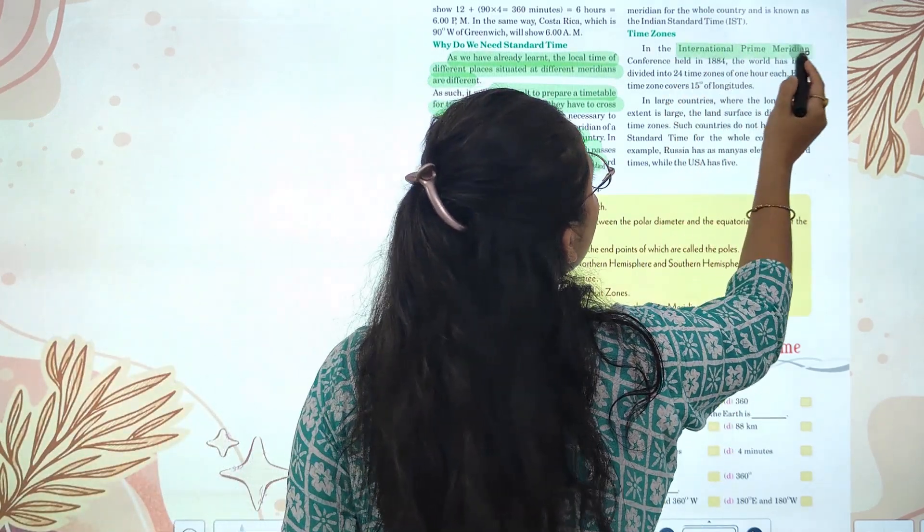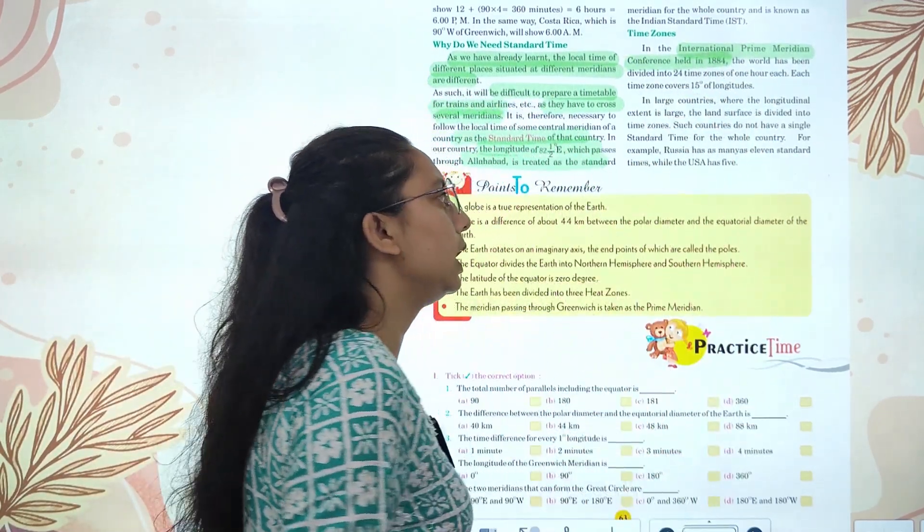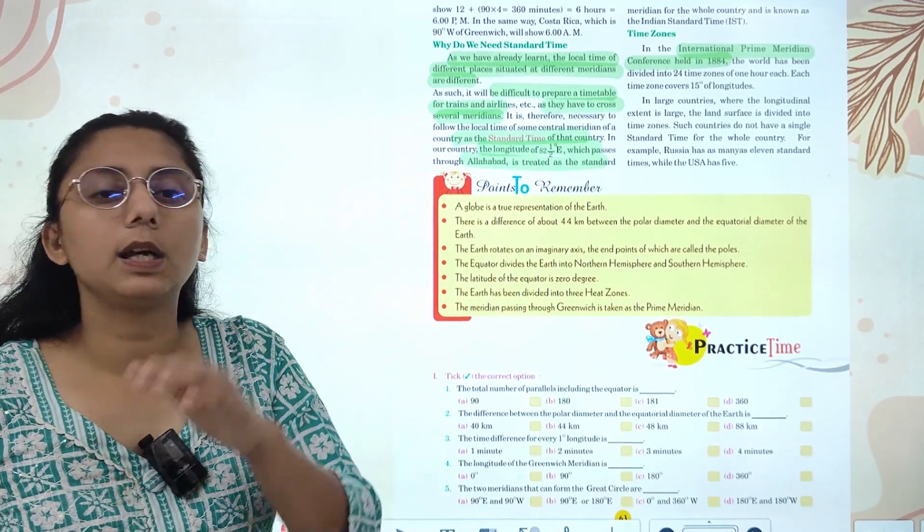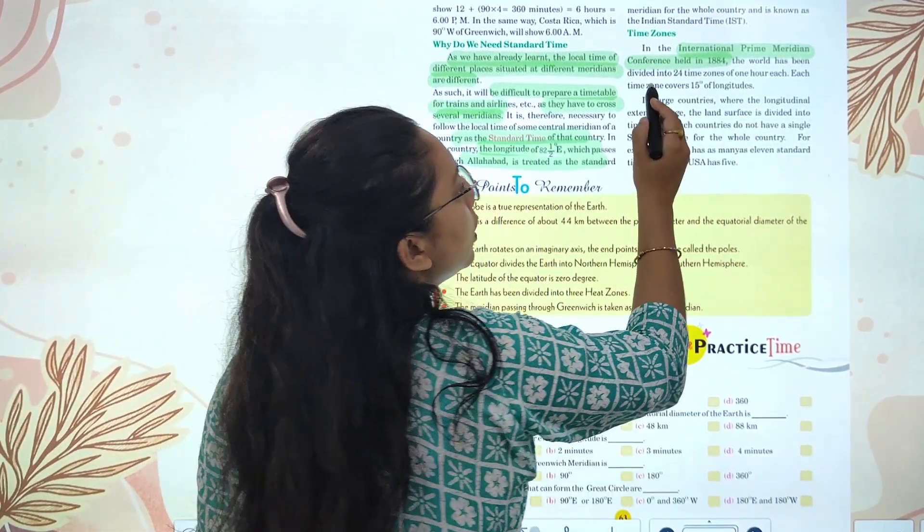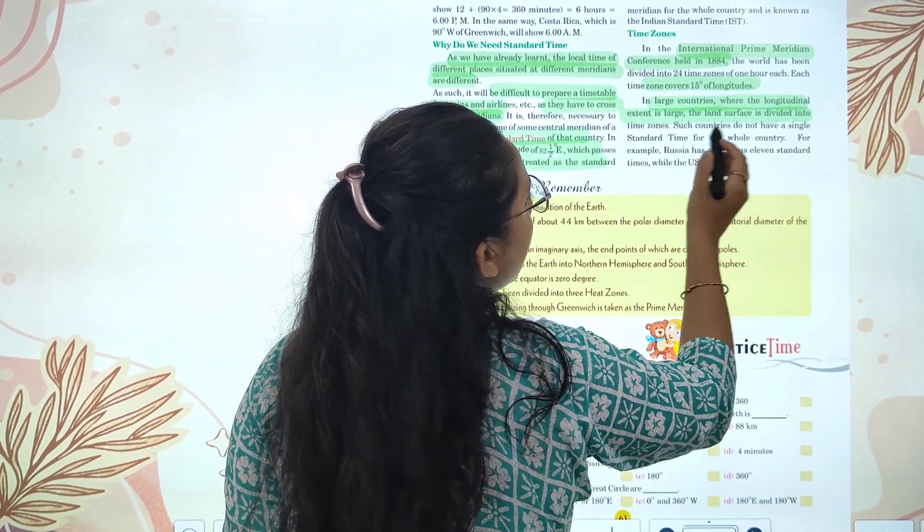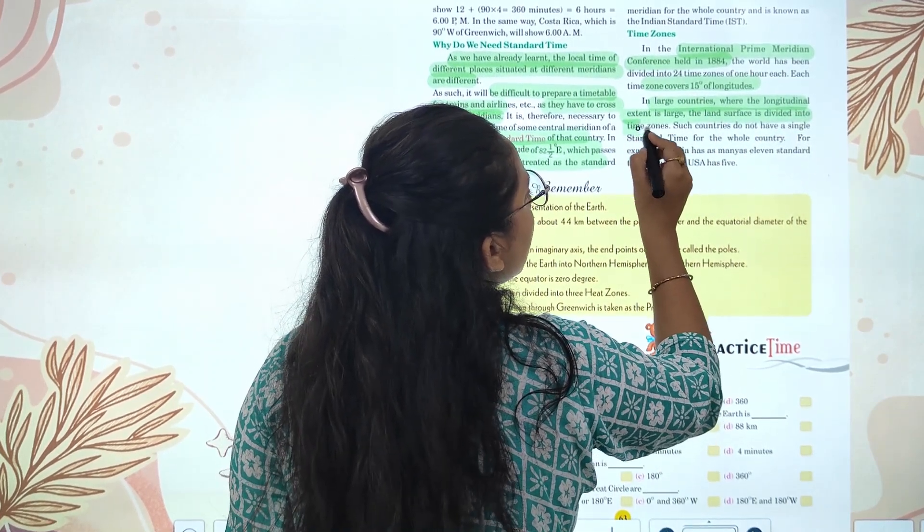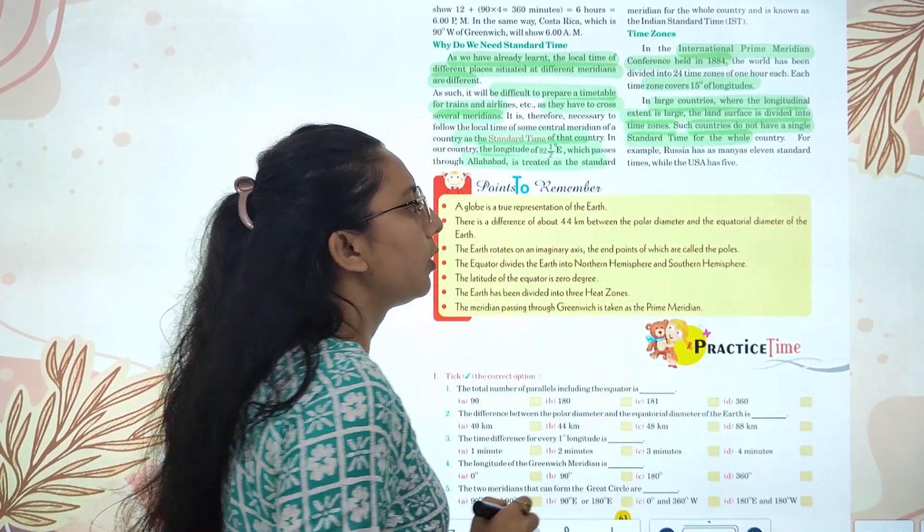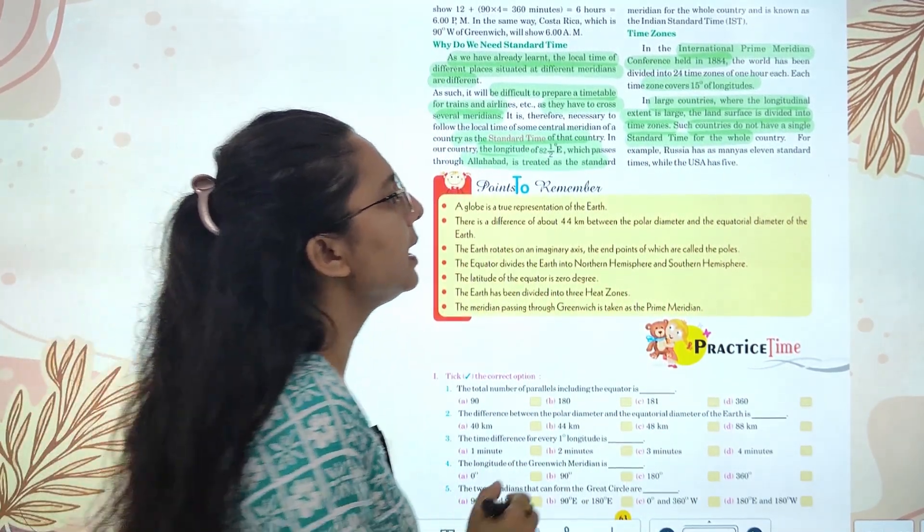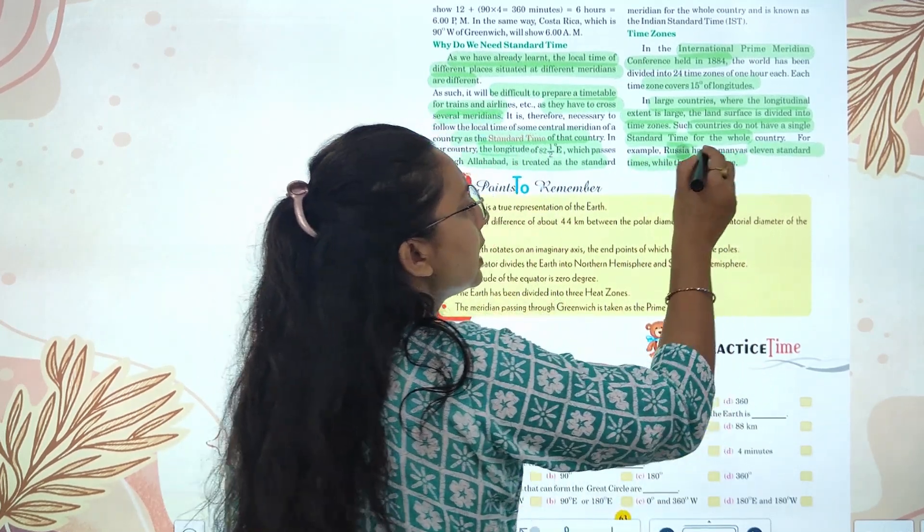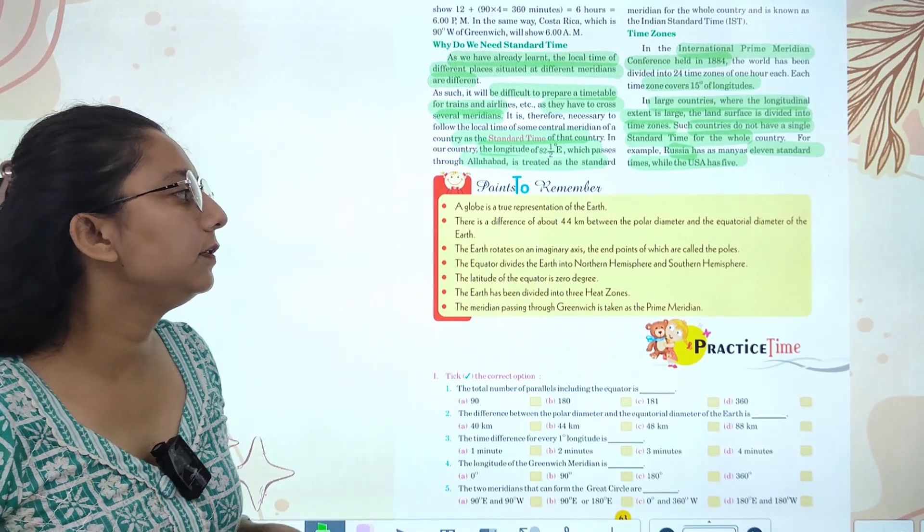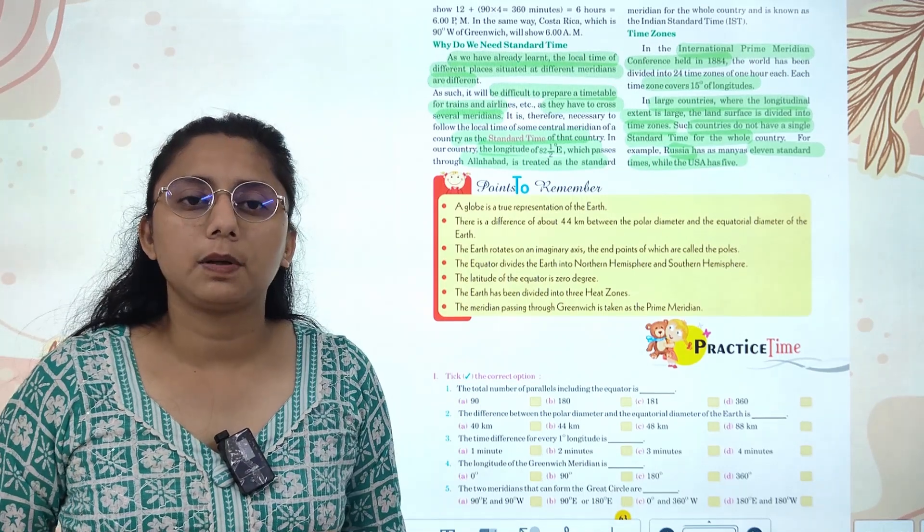Time zones. At the International Prime Meridian Conference held in 1884, the world was divided into 24 time zones, one hour each, covering 15 degrees of longitude. Large countries with large east-west extent are divided into multiple time zones. They do not have a single standard time for the whole country. For example, Russia has 11 standard times and USA has 5 standard times.